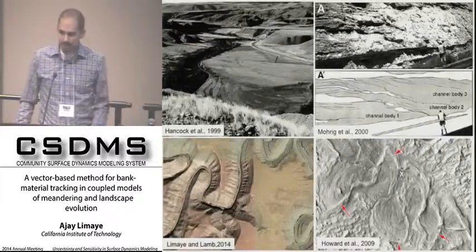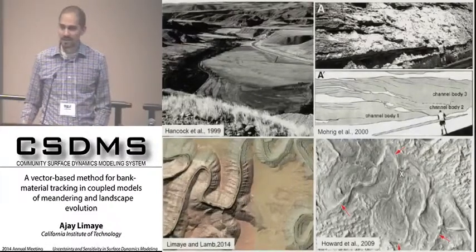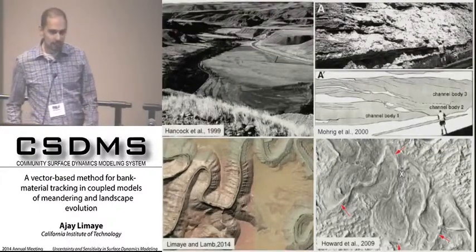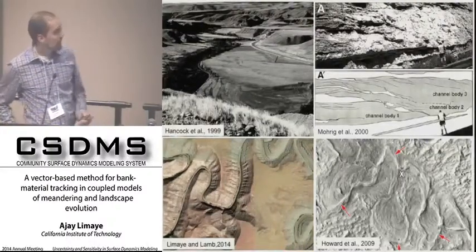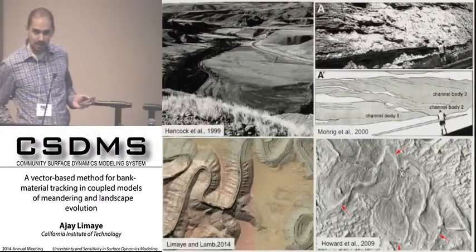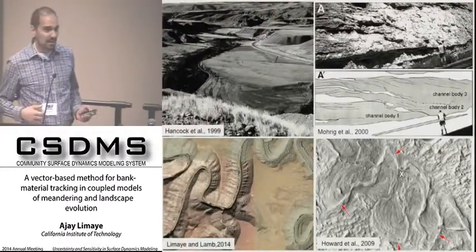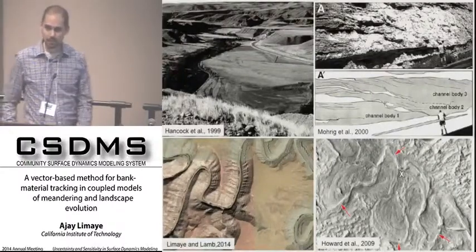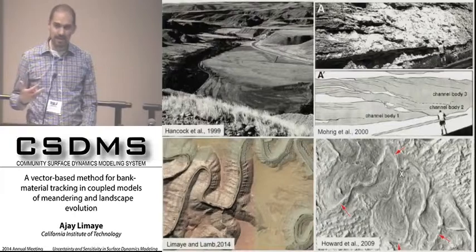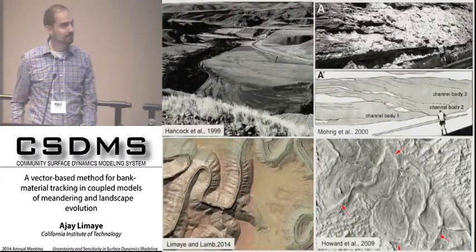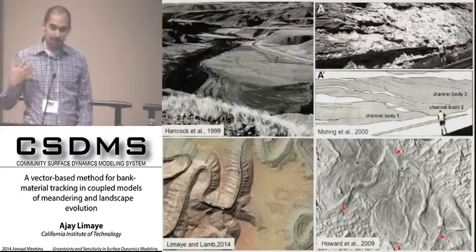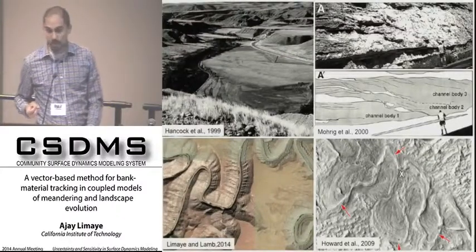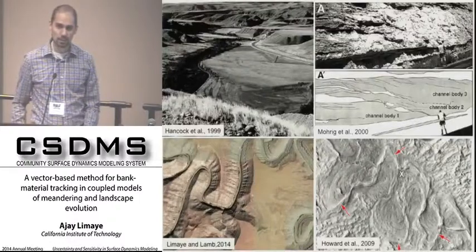The lateral movement of channels is a fundamental geologic process that ties into many broader themes in Earth's surface science. For example, in bedrock river valleys, channel migration may be muted in some cases, but in other locations it's very common to find strath terraces preserved in the landscape. These terraces form by valley widening carried out by channels, and the formation of different terrace levels is often conceptually linked to changes in climate and tectonics that affect entire watersheds.